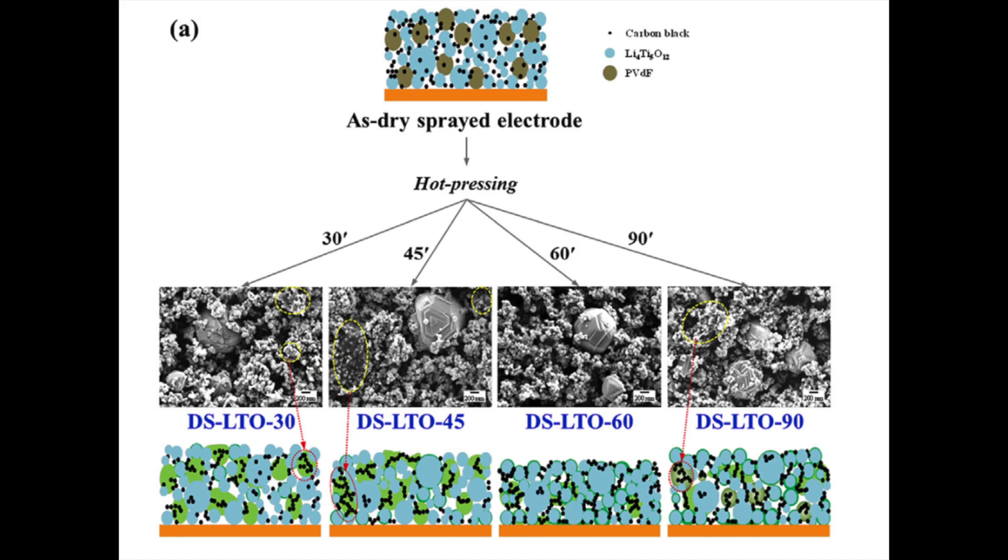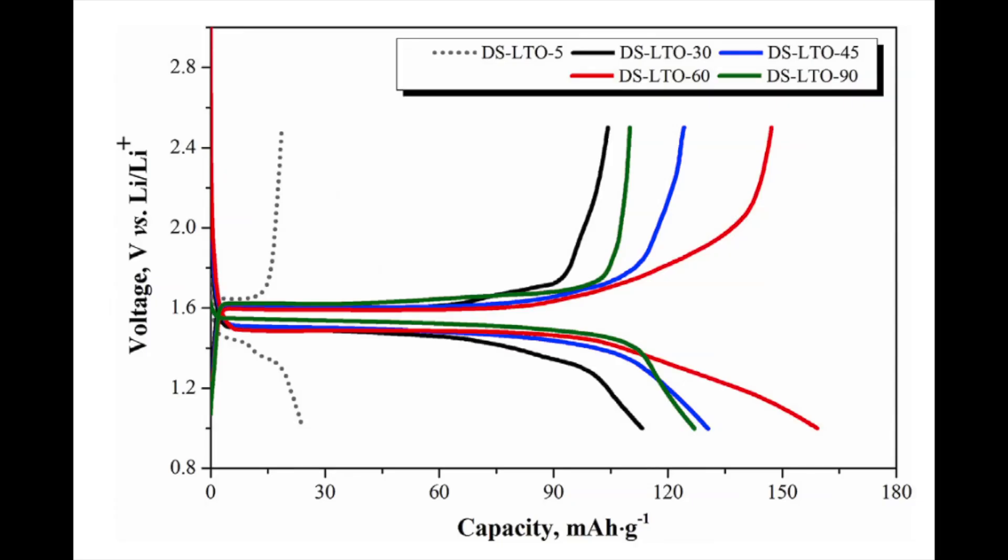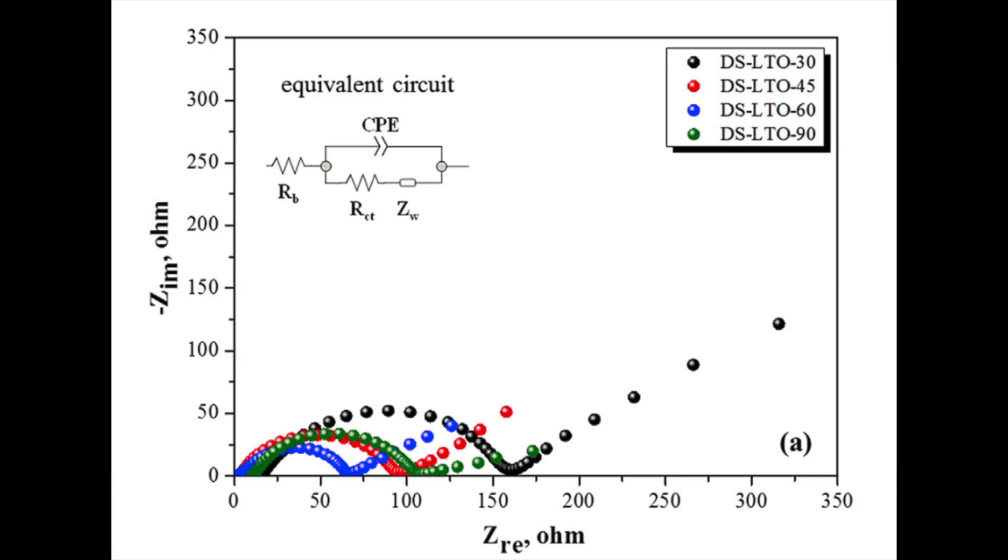The variable of interest in this case was the amount of time the electrode was pressed. The researchers tried four different times of 30, 45, 60, and 90 minutes in the hot press. The study goes into depth to explain why the 60 minute time resulted in the optimal performance. At a top level, this is because the 60 minute time resulted in the optimal amount of PVDF binder melting to form strong adhesion to the current collector and cohesion between neighboring active materials, but not too much to result in recrystallization of the binder and poor electrical conductivity.